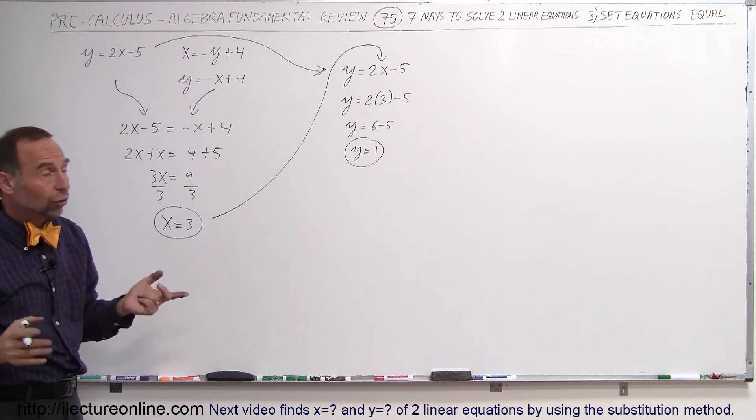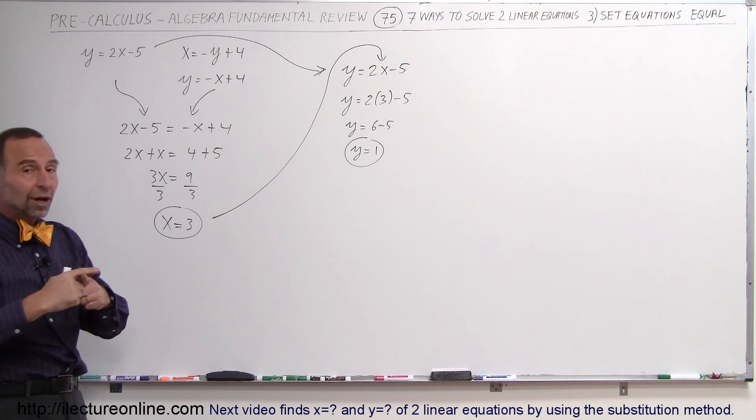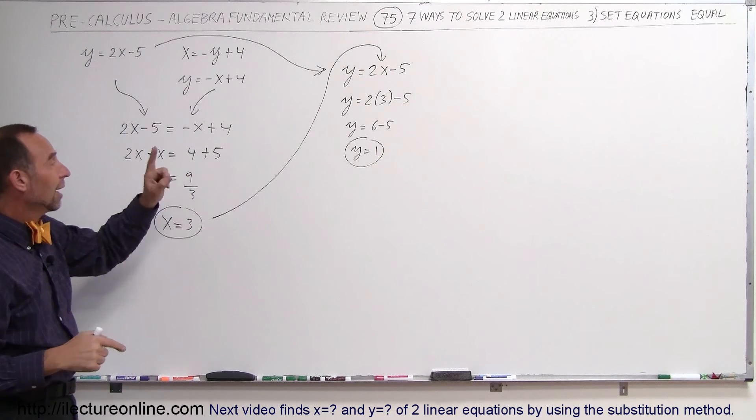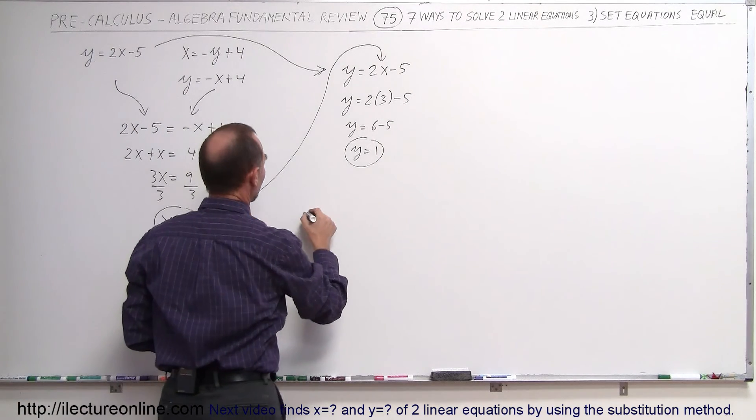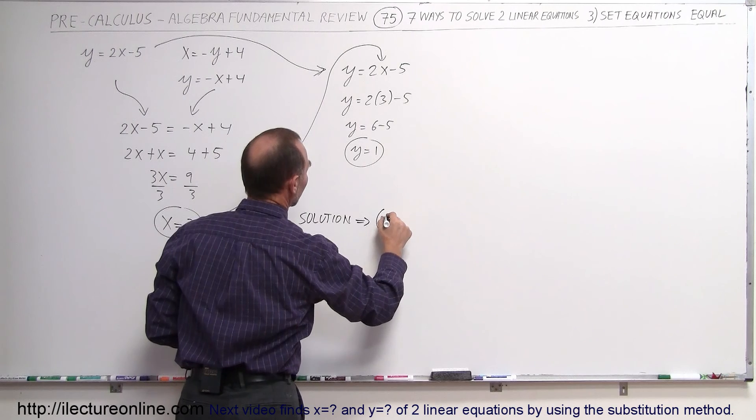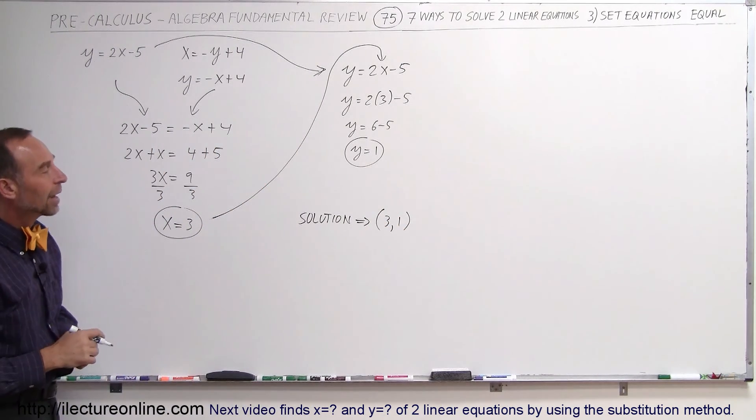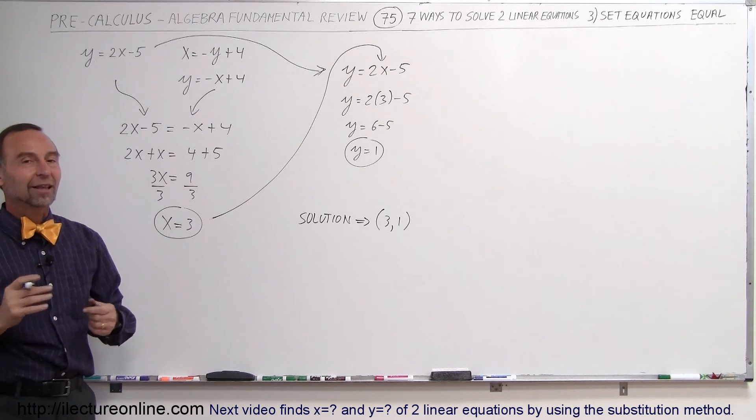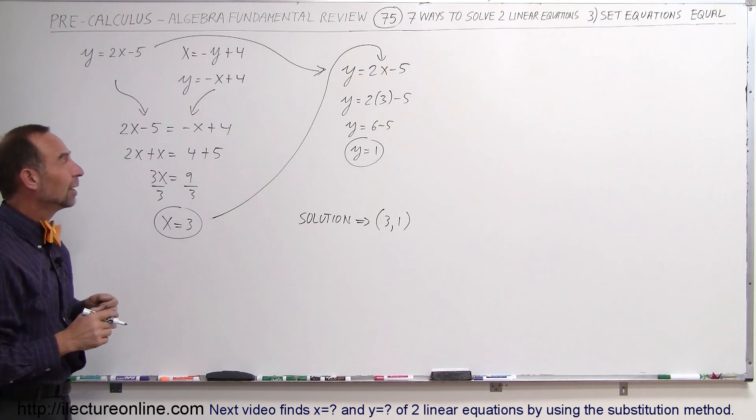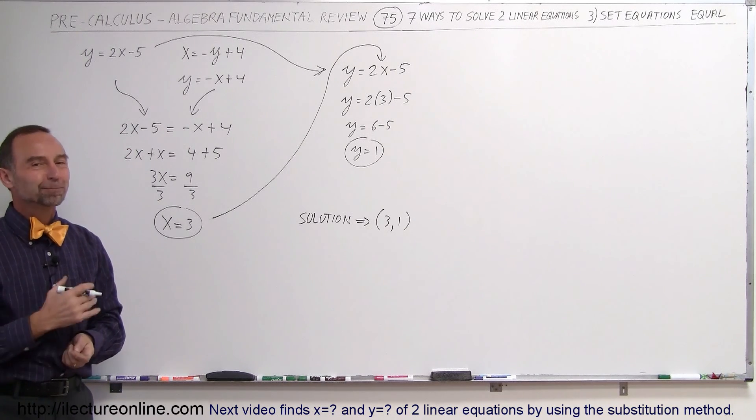So finally we can say that the solution, the place where the two lines cross, is where x equals 3 and y equals 1. So therefore the solution, we can say that it's 3 comma 1. That's the location on the x y axis where the two lines cross, and that's therefore the solution to the two lines on the board. That's how we do that.